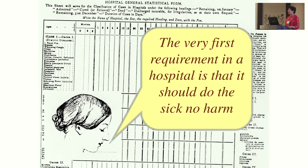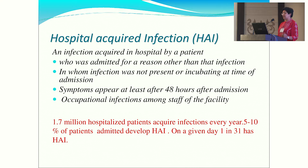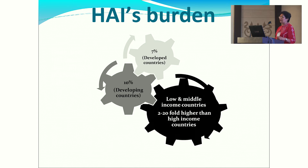The first requirement in a hospital is that it should do the sick no harm. A hospital-acquired infection is defined as any infection acquired in the hospital by a patient admitted for a reason other than that infection, in whom the infection was not present or incubating at the time of admission, and symptoms appear at least 48 hours after admission. It also includes occupational infections among staff. 1.7 million hospitalized patients acquire infections every year; 5 to 10% develop HAI. Low- and middle-income countries have 2 to 24 times higher burden compared to developed nations.